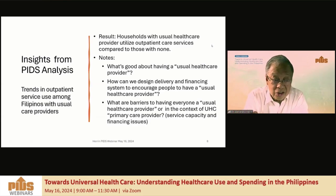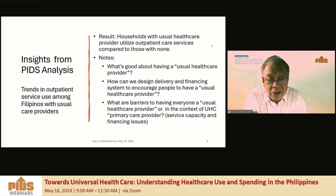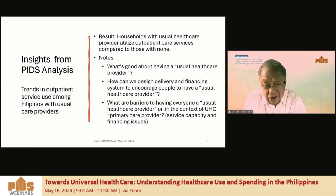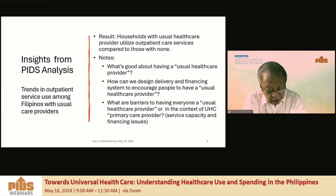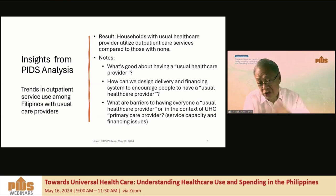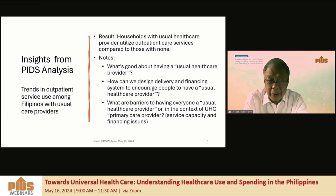Insights from the PIDS analysis, starting from the report of Ida: one result is that households with a usual healthcare provider utilize more outpatient care services compared to those with none. Notwithstanding issues regarding the term 'usual healthcare provider,' which includes many kinds of providers, and the term 'outpatient services,' which includes a number of services, and also the issue of which comes first — you use services and therefore you have a usual healthcare provider, or you have a healthcare provider and therefore you use more services. Perhaps an interesting question is: what is good about having a usual healthcare provider?